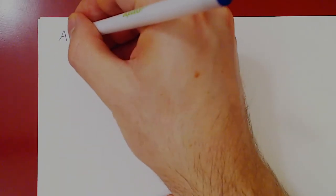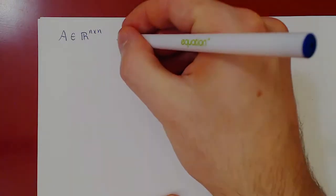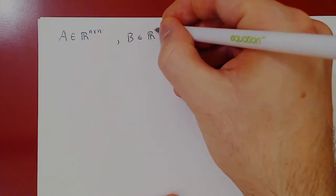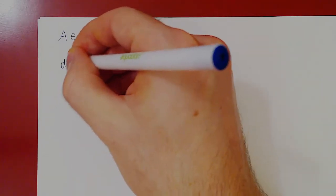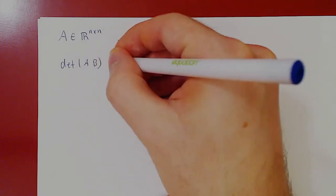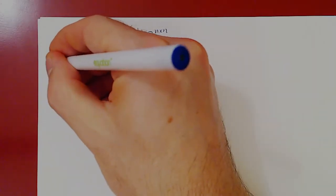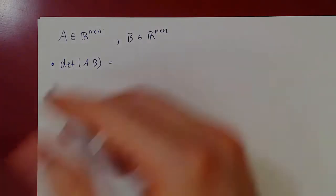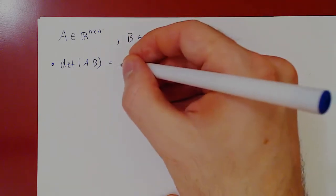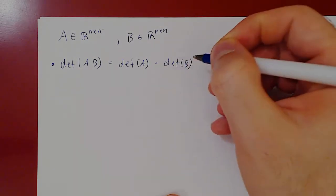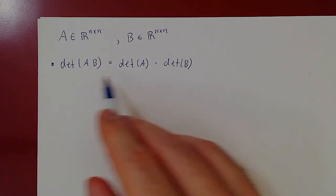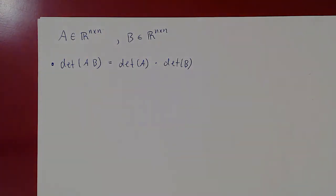Take A to be an n by n matrix, and B also a square matrix of the same size. The determinant happens to be a multiplicative function: the determinant of AB equals the determinant of A times the determinant of B. This is a non-trivial property — it's really not clear why this is true, but proving it would take a month. The same holds over a longer product: the determinant of ABC equals the determinant of A times the determinant of B times the determinant of C.